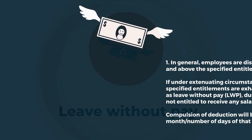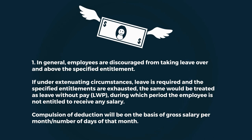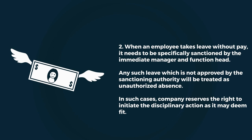In general, employees are discouraged from taking leave over and above the specified entitlement. If under extenuating circumstances leave is required and the specified entitlements are exhausted, the same would be treated as leave without pay, during which the employee is not entitled to receive any salary. The deduction will be on the basis of gross salary per month divided by the number of days in that month. Leave without pay needs to be specifically sanctioned by the immediate manager and function head. Any such leave not approved by the sanctioning authority will be treated as unauthorized absence, and the company reserves the right to initiate disciplinary action as it may deem fit.